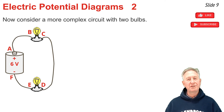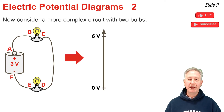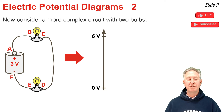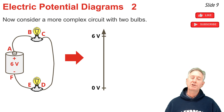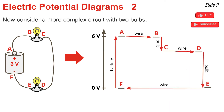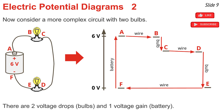Here is a more complex circuit consisting of two bulbs and a 6-volt battery. Because it's a 6-volt battery, the electric potential diagram uses a scale with 0 volts at location F and 6 volts at the positive terminal, location A. The diagram shows two significant drops: the drop in electric potential for charge passing from location B to C and from location D to E, corresponding to the two light bulbs. The resulting diagram shows two voltage drops for the light bulbs and one voltage gain for charge passing through the battery.